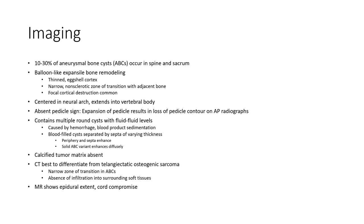Imaging: 10-30% of aneurysmal bone cysts occur in the spine and sacrum. Features include ballooning-type expansile bone remodeling, thin residual cortex, and narrow non-sclerotic zones of transition with adjacent bone. The lesion is centered in the neural arch and extends into the vertebral body with cortical destruction.